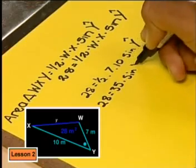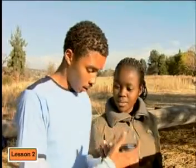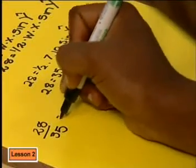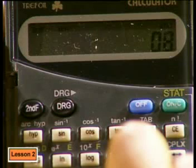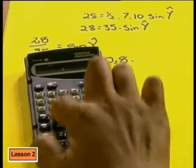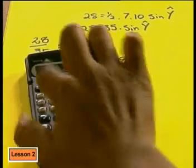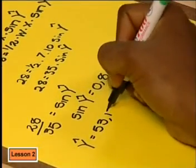So 28 equals 35 times sine Y. If we divide both sides by 35, we'll get sine of Y equal to 28 divided by 35. That's quite hard, so I guess we'll have to use a calculator. Right, so that's 28 divided by 35 is 0.8. So if sine Y is 0.8, to get angle Y we must use the inverse sine key on the calculator. That comes to 53.13 degrees. Let's round that off to two decimal places.